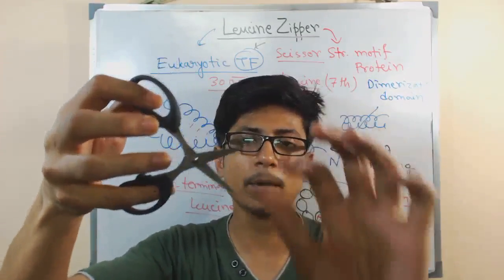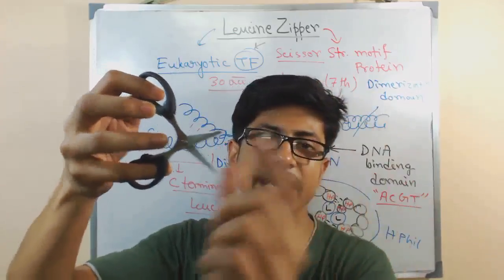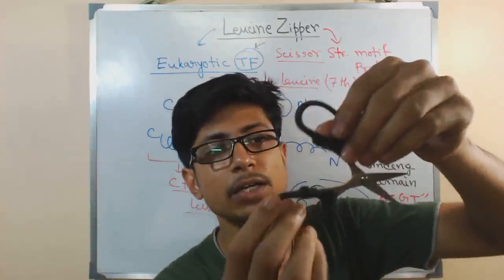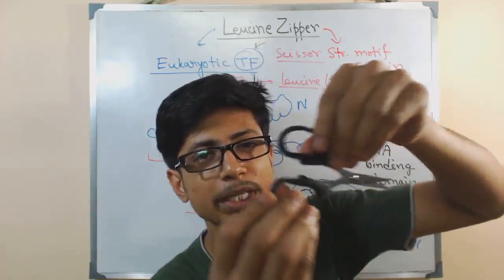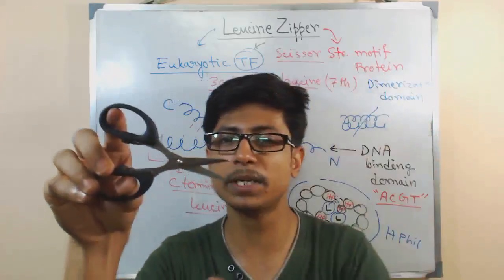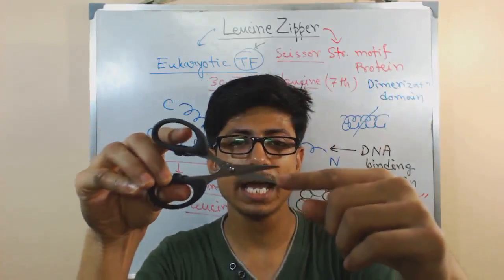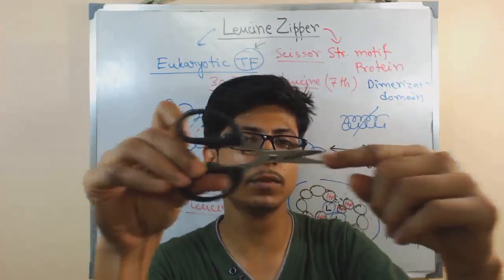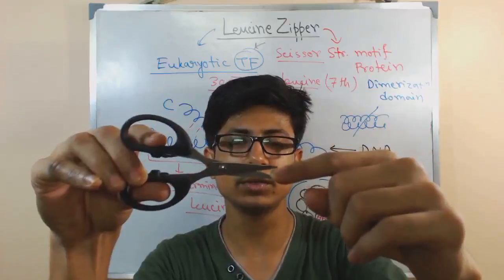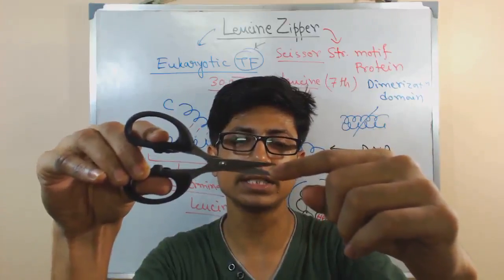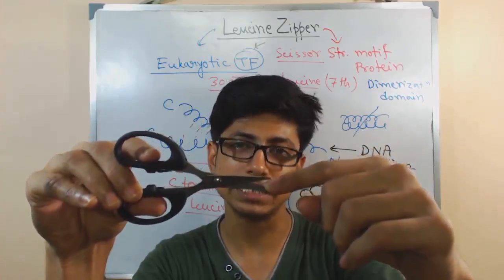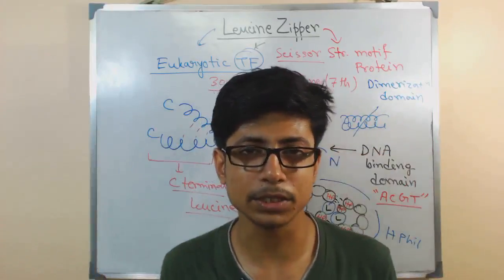For it to interact properly, there should be proper arrangement of those two N-terminals. That arrangement is possible due to the hydrophobic interaction between this leucine zipper region. As the leucine zipper is very close due to the hydrophobic interaction, it places itself properly to the DNA, attaches itself properly, and then starts the initiation of transcription in eukaryotic DNA. That's how the leucine zipper works.